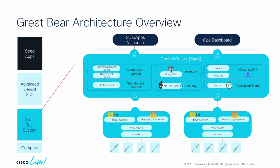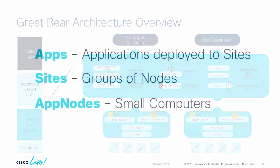Northbound, you have an API — everything is API-driven. You can bolt on your operational solution, like AppDynamics or Grafana. We also have a dashboard that we can bolt on to.